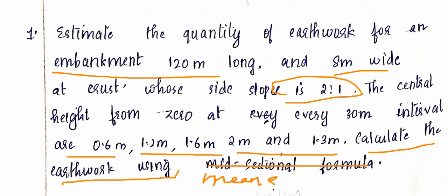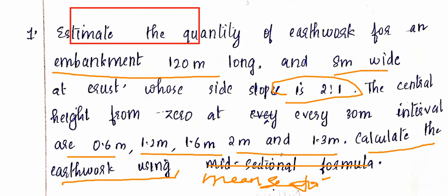We will solve this using the Mean Sectional Area Method. The embankment cross-section has a trapezoidal shape — a rectangular central portion with triangular side portions. The road cross-section is trapezoidal, with a length of 120 meters and a width of 8 meters at crust.